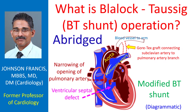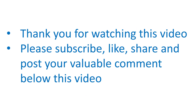In turn, blood from the left atrium reaches the left ventricle and is pumped into the aorta. Hence, the BT shunt increases the oxygen content of blood reaching the body and decreases cyanosis.